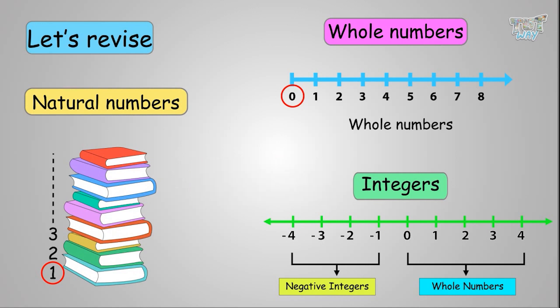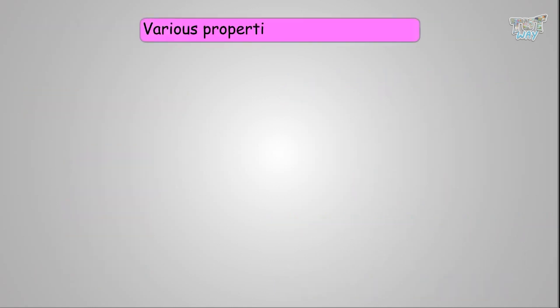In all three lists — the list of natural numbers, the list of whole numbers, and the list of integers — you cannot specify the ending number or the last number. Let's first understand various properties of whole numbers, which help us to do calculations.